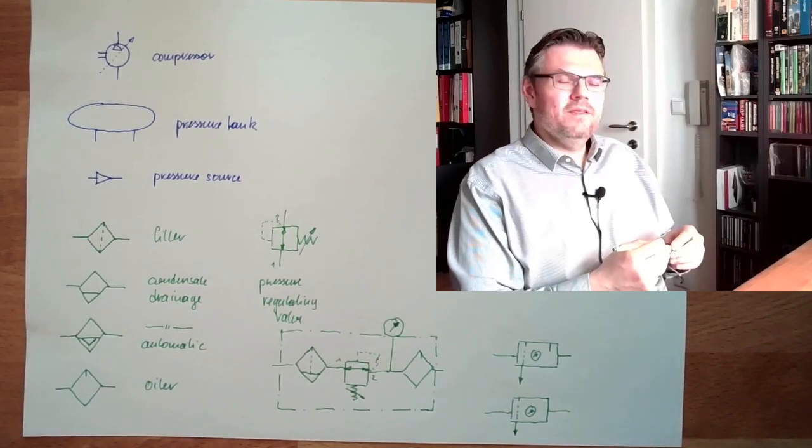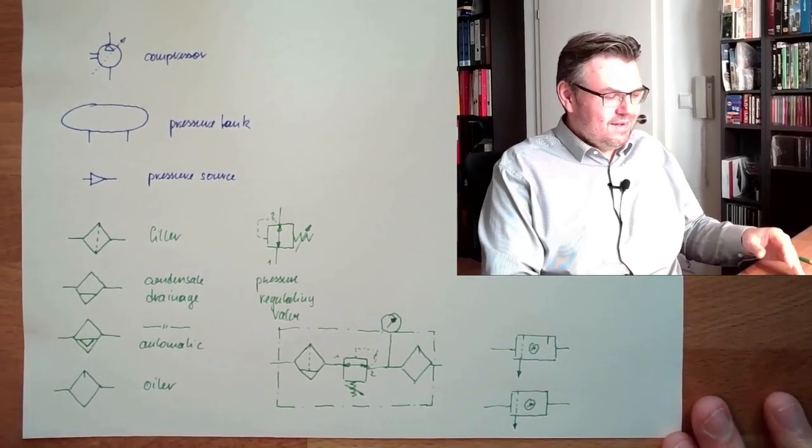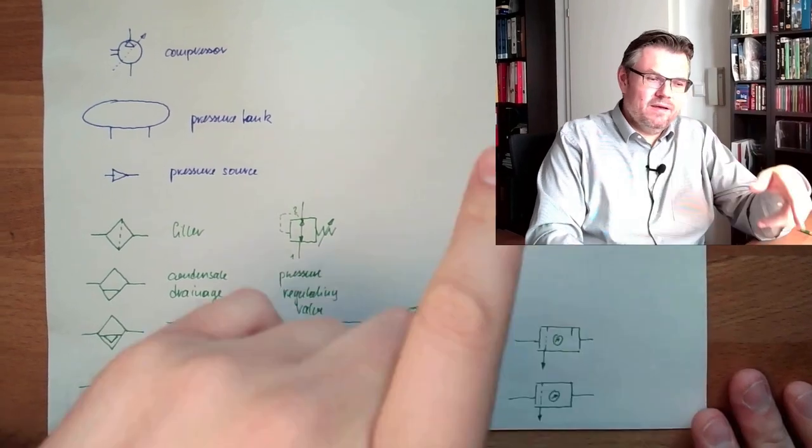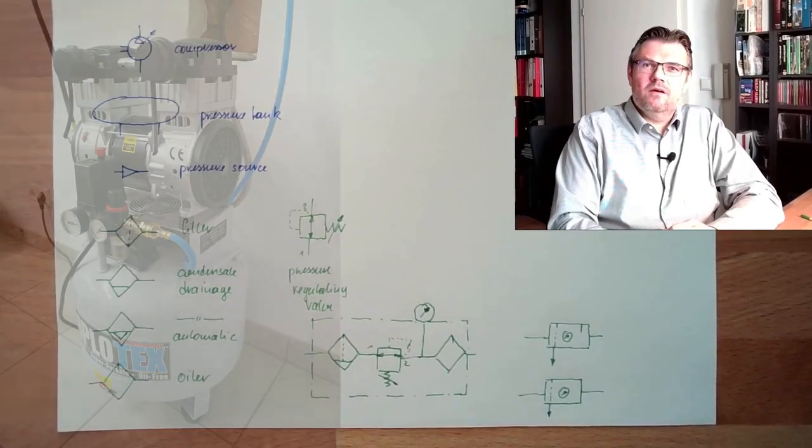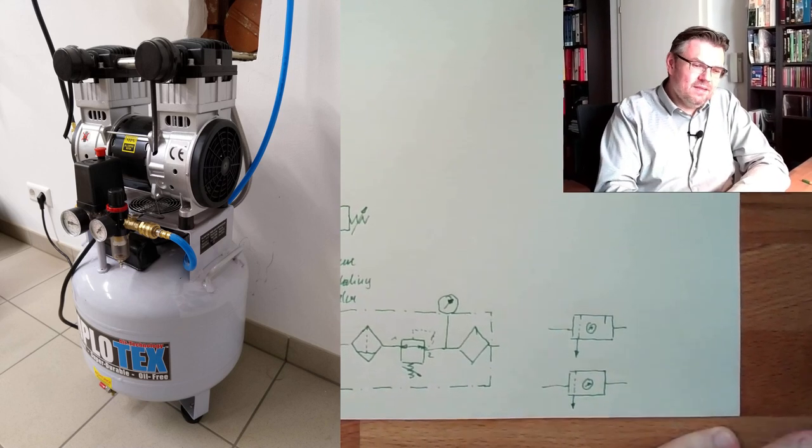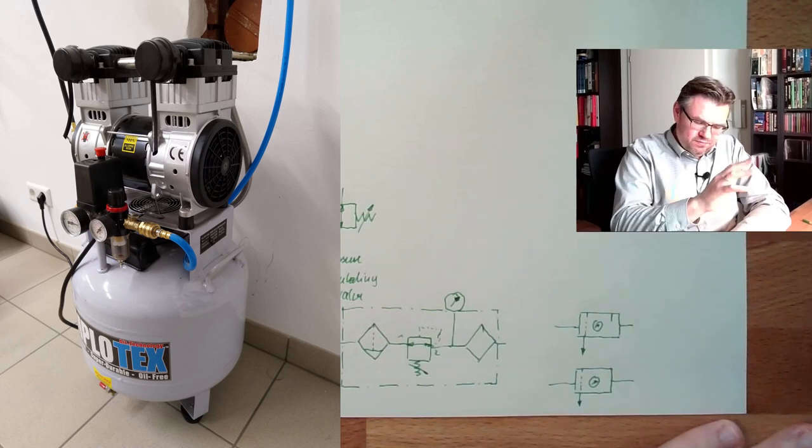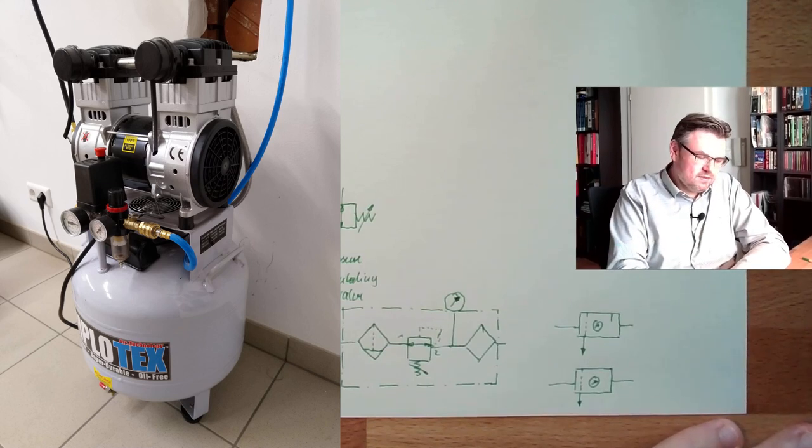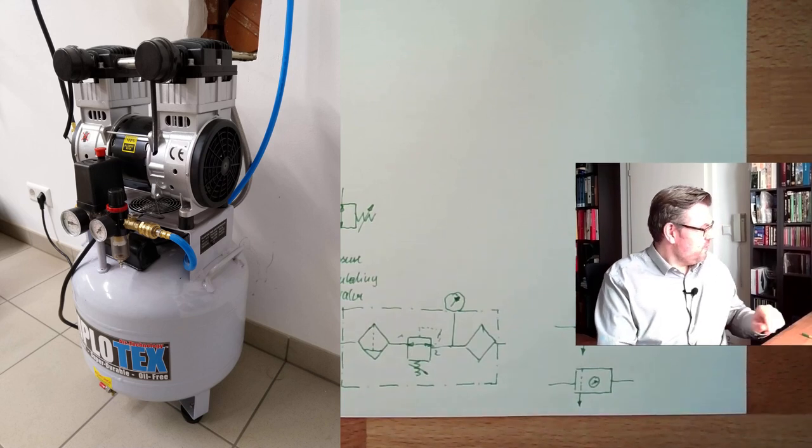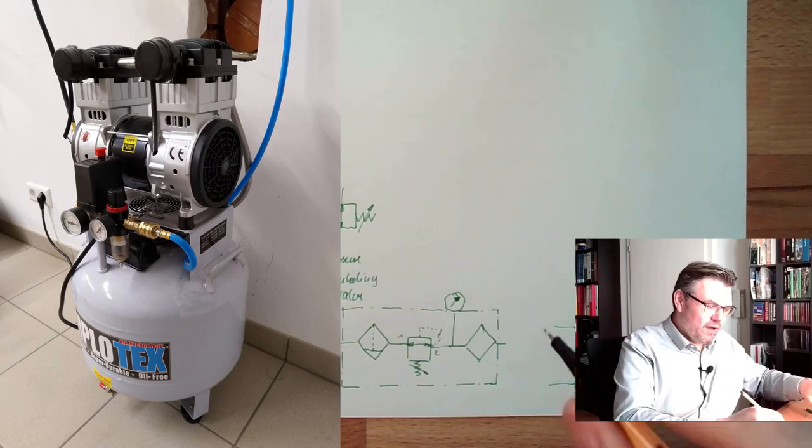So these are the symbols. I show you now a picture of my compressed air system down in my workshop. And you see the several parts of it. Actually, what this would mean. It would look, when drawing this, it would look like this.